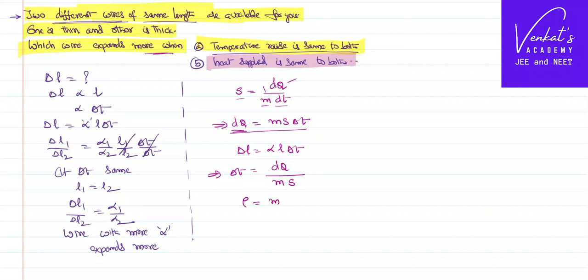But m is not given for you. You can write density equal to mass by volume. That implies mass can be written like density into volume. Density into volume can be written further like area into length.